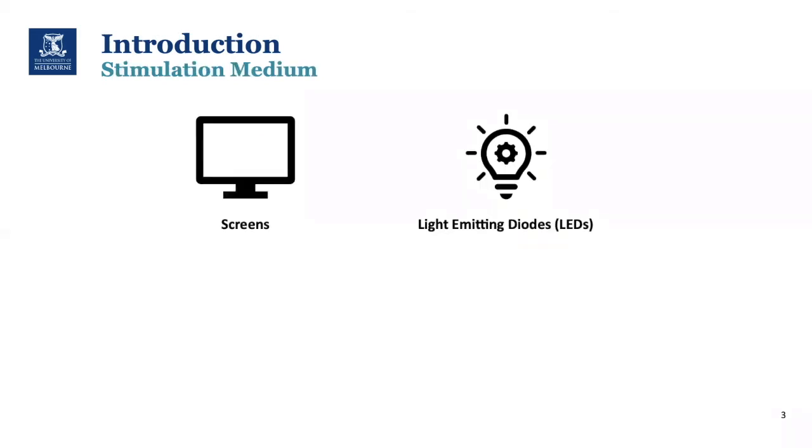In general, there are two types of stimulation media: computer screens and LEDs. Both have their advantages and are used in different applications. From the application point of view, screens are preferred in tasks where no physical actions are required because they are easier to set up and program. LEDs play an important role when the task is not confined to screens, as they are easier to attach to physical objects.